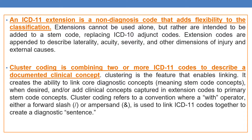The next feature is cluster coding. Cluster coding is combining two or more ICD-11 codes to describe a documented clinical concept. Clustering is the feature that enables linking — it creates the ability to link one core diagnostic concept (the STEM code) and or additional clinical concepts captured in extension codes to primary STEM codes, linking diagnosis codes to non-diagnosis codes.